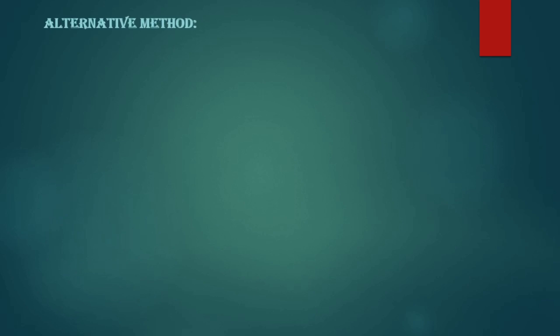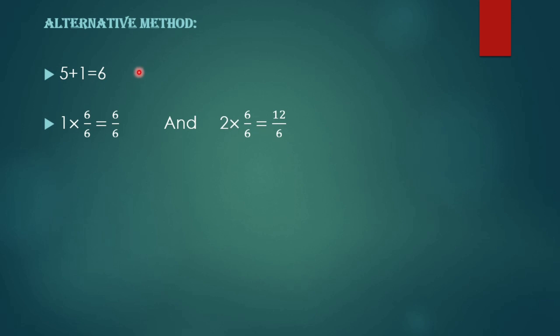If you find this method lengthy, here is an alternative: the equivalent fraction method. To find 5 rational numbers, we add 1 to 5, which equals 6. The first number, 1, is multiplied and divided by 6 to give 6/6, and the second number, 2, is also multiplied and divided by 6 to give 12/6. Now it is easier to find rational numbers between 6/6 and 12/6.